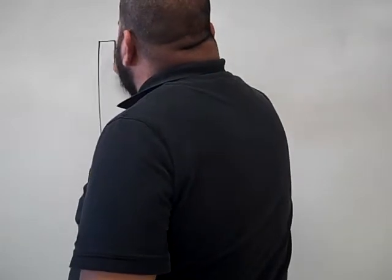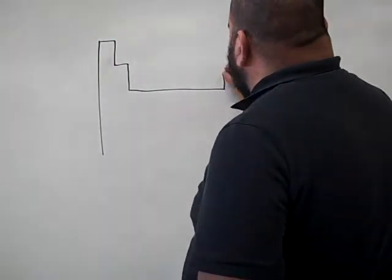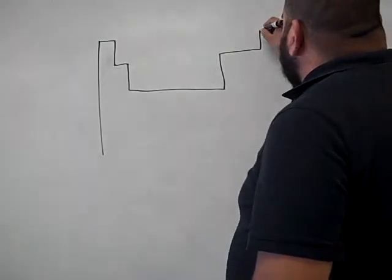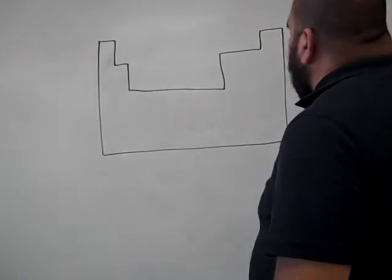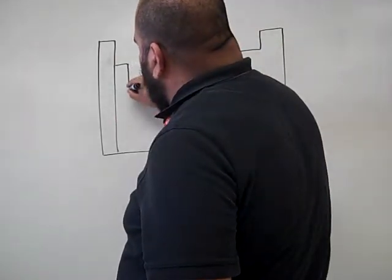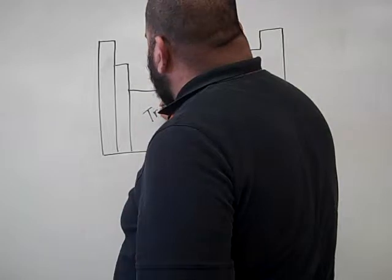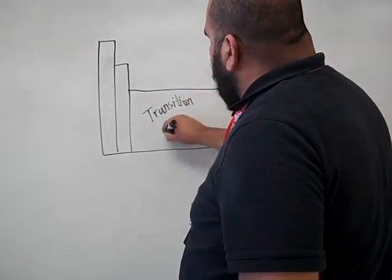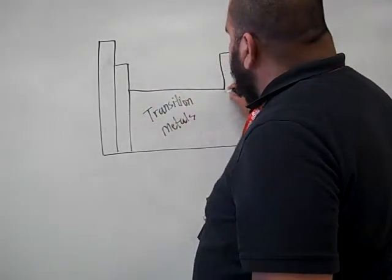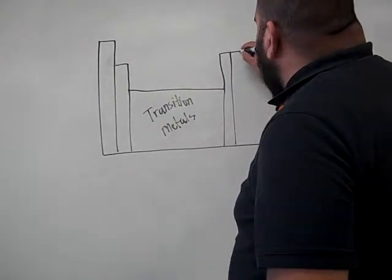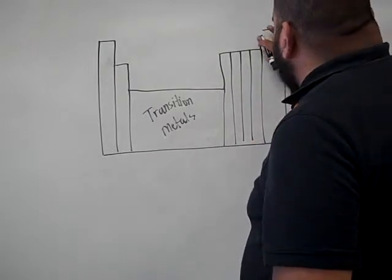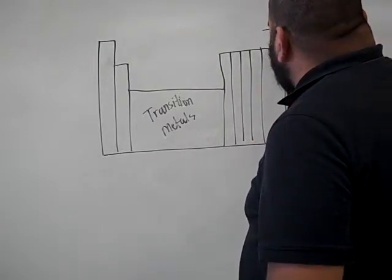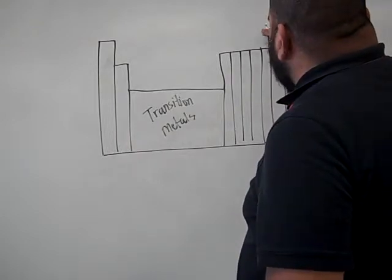So basically you have your periodic table and I'm drawing a very fake periodic table right here. You have group 1, group 2, you have the transition metals here, you have group 3, group 4, group 5, group 6, we're going to add another one over here, group 7, and then finally the noble gases.